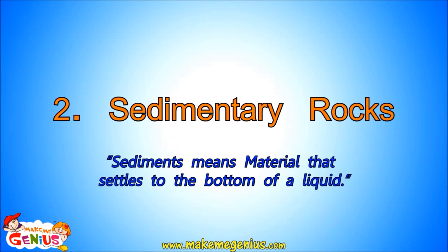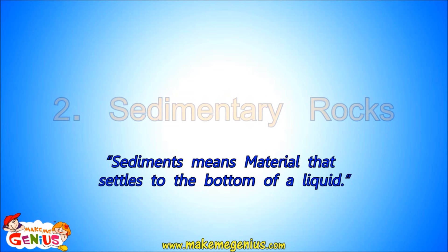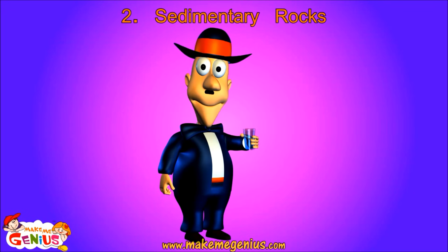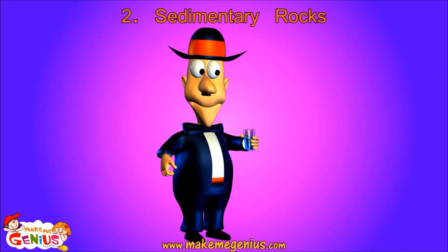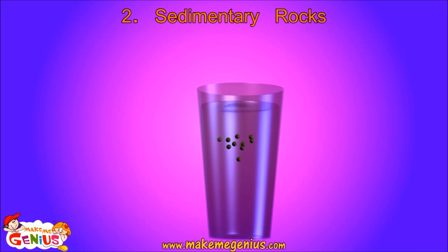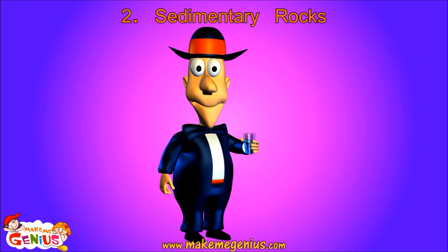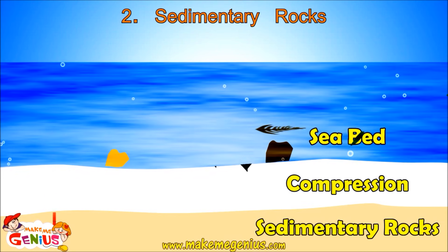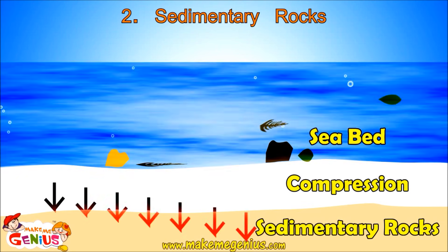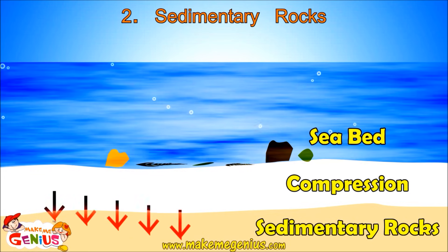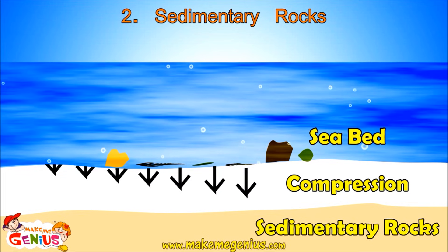Now let's move on to the second type of rocks — sedimentary rocks. The word sedimentary means made from sediments, which is material that settles to the bottom of a liquid. You are carrying a few stones and a glass of water. Put these stones in the glass — see these settle down? This settled-down material is called sediment. Sedimentary rocks are formed by layers of sediment. Sediment is comprised of small parts of rocks, as well as dead animals or plants, which have been eroded by strong winds and a strong flow of water in rivers and glaciers.